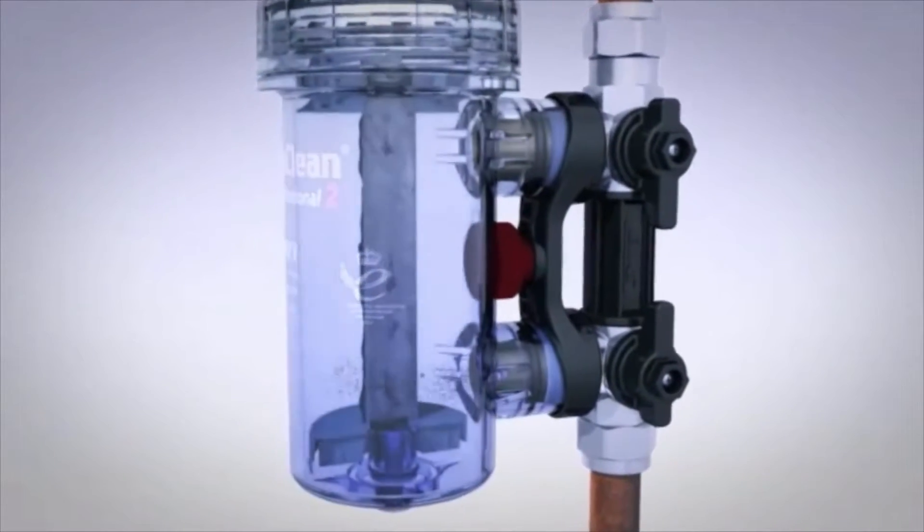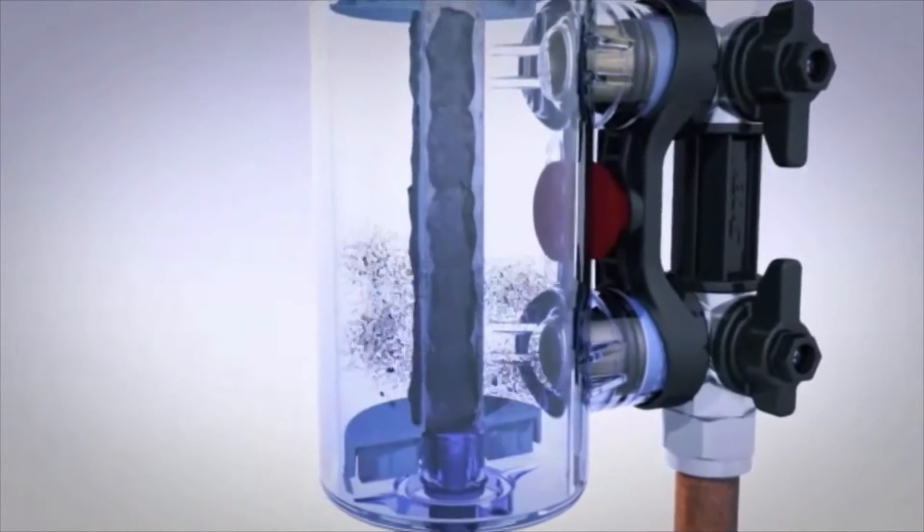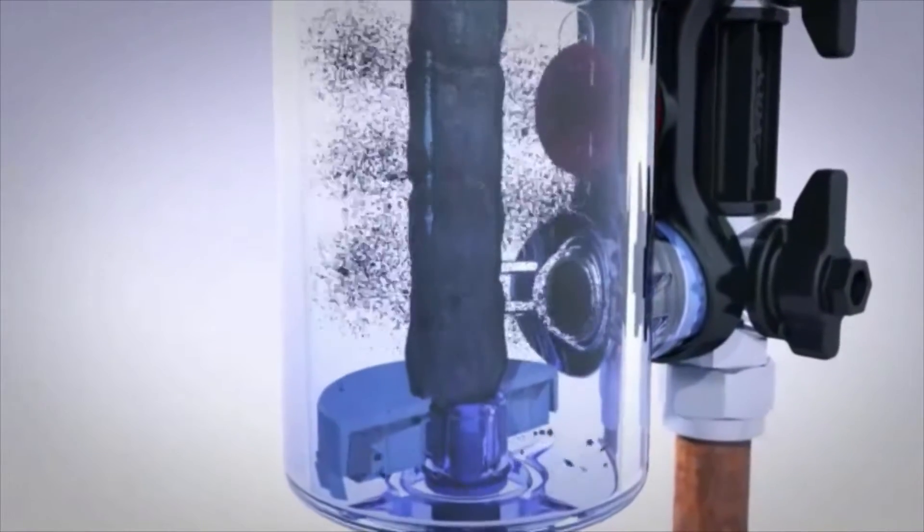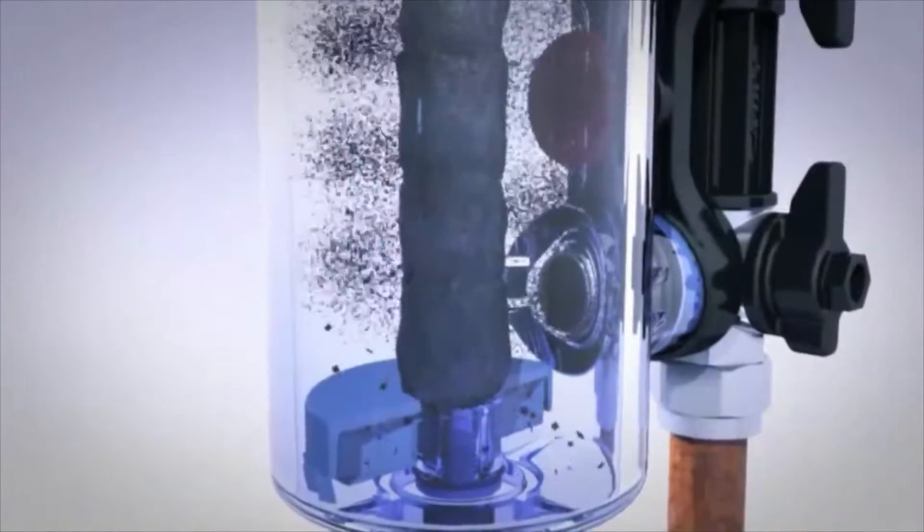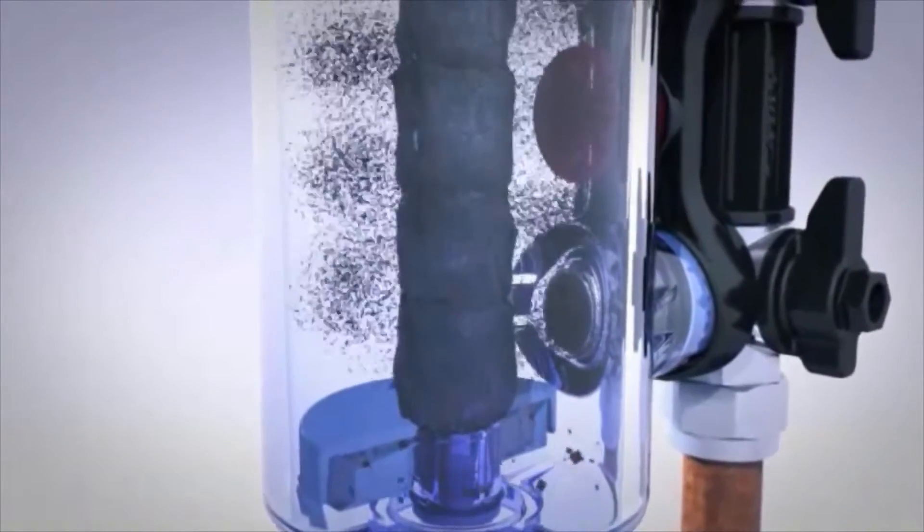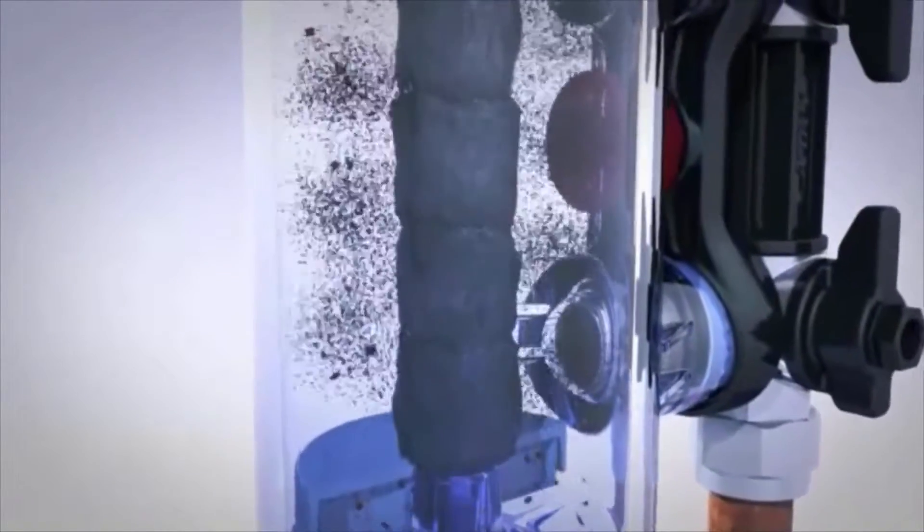Let's see how MagnaClean Professional 2 works to protect the system from sludge and debris. At the heart of MagnaClean is a highly powerful magnet and sheath, designed to sit at the centre of the flow path.